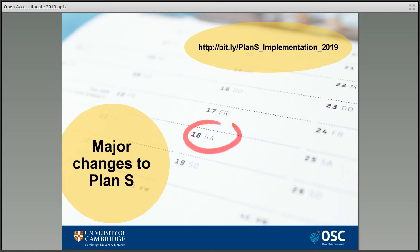Perhaps the biggest change is that originally the plan was set to be implemented from 2020, but this has now been pushed back to January the 1st, 2021. The rather tight timescale was a major concern when the plan was first announced, and this delay gives funders, publishers and institutions more time to prepare for and implement any necessary changes. Different funders are going to implement the plan in different ways — for some it's a definitive date, and for others the principles will only apply to grants issued after this date.